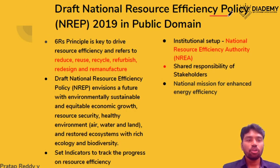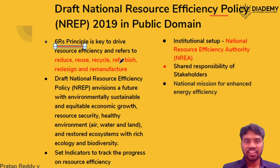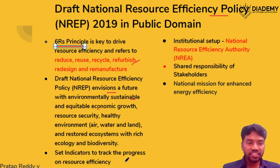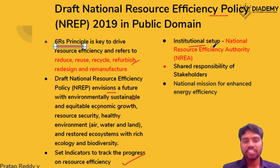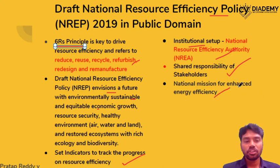Draft National Resource Efficiency Policy: This policy is built on Six R principles. We already know three R's — Reduce, Reuse, Recycle — and the other three are Refurbish, Redesign, and Remanufacture. It envisages a future with sustainable and equitable economic growth. It has set targets to track the progress of how efficiently resources are utilized. For this purpose there is an institutional setup called the National Resource Efficiency Authority. One key feature is shared responsibility among all stakeholders. Remember we have the National Mission for Enhanced Energy Efficiency as one of the eight missions under the National Action Plan on Climate Change.